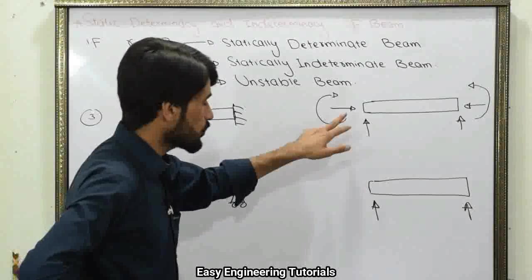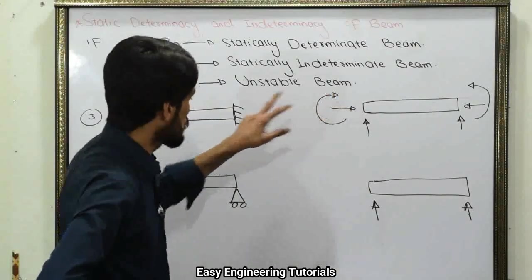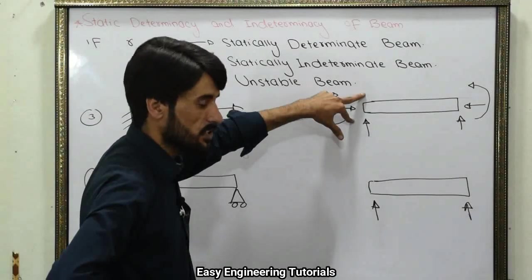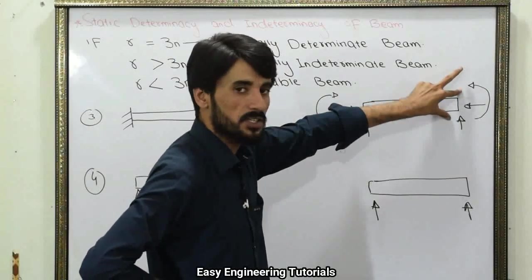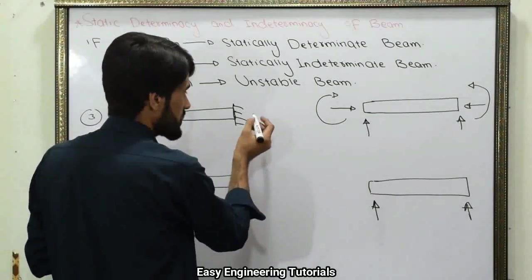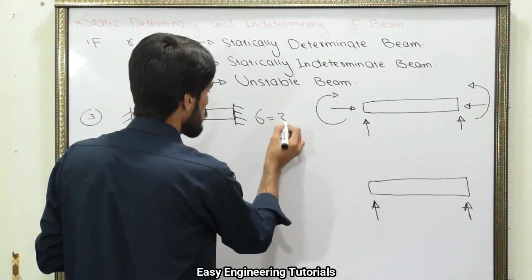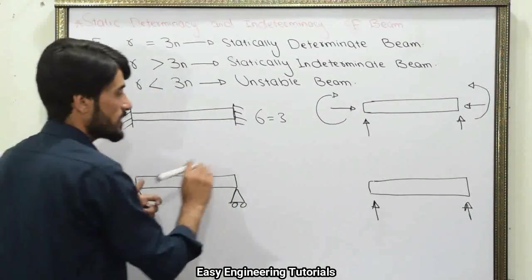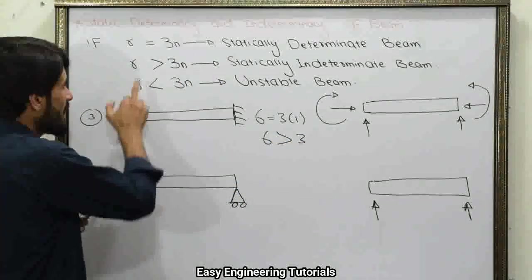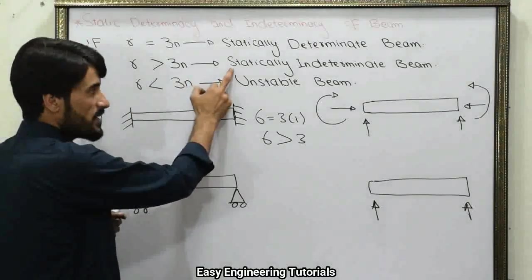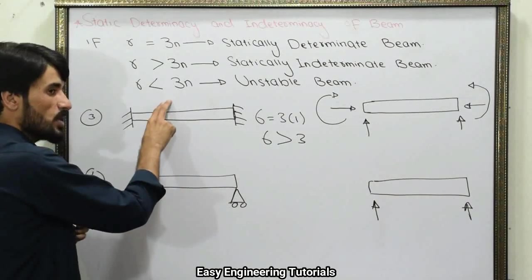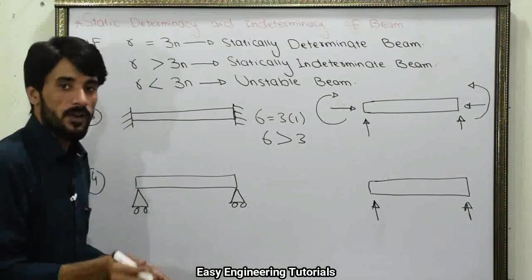Example 3: If both sides of the beam are fixed. Fixed support provides 3 unknown reactions, so both sides give R = 6. N = 1, so 3N = 3. Since 6 > 3, R is greater than 3N, and therefore this beam is also a statically indeterminate beam.